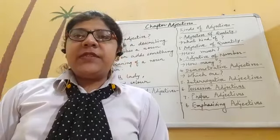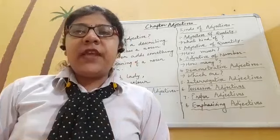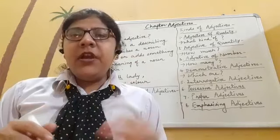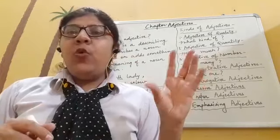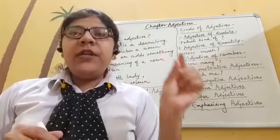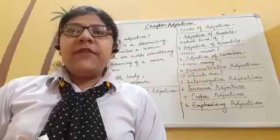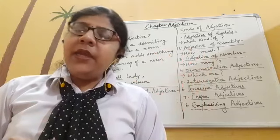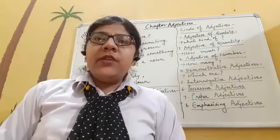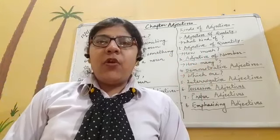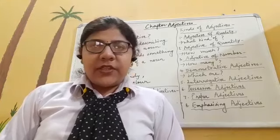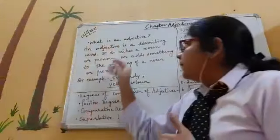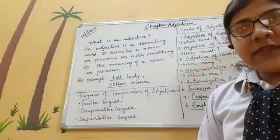The last kind is emphasizing adjectives — adjectives which give emphasis. For example, 'I have completed my work by my own hands' — the word 'own' gives emphasis, stressing that the work was done by my own hands. So 'own' is called an emphasizing adjective.